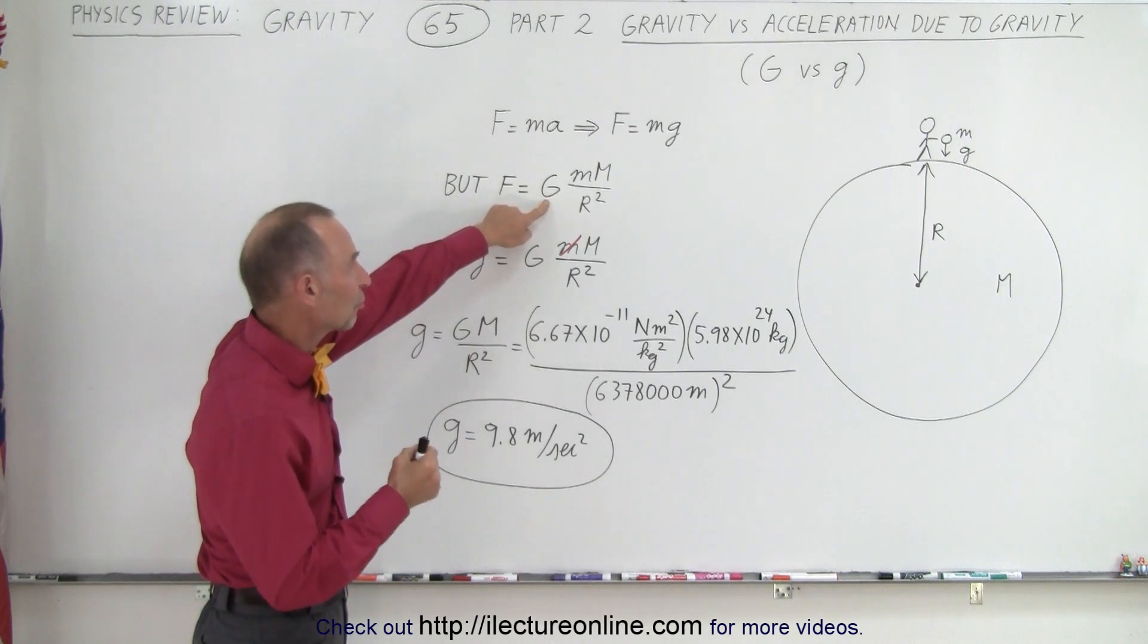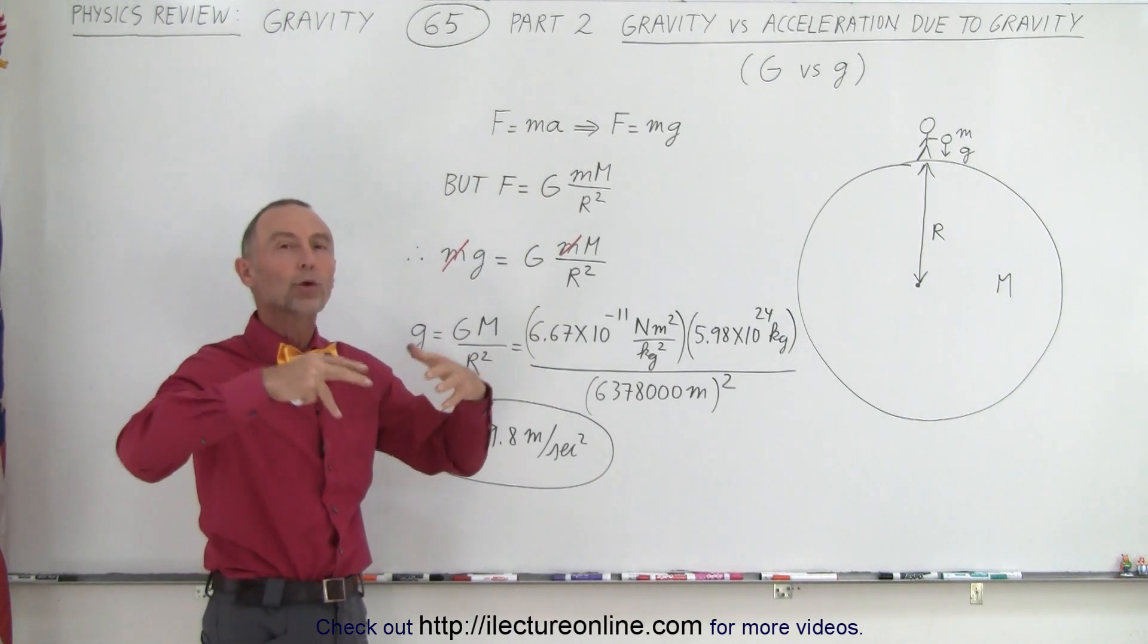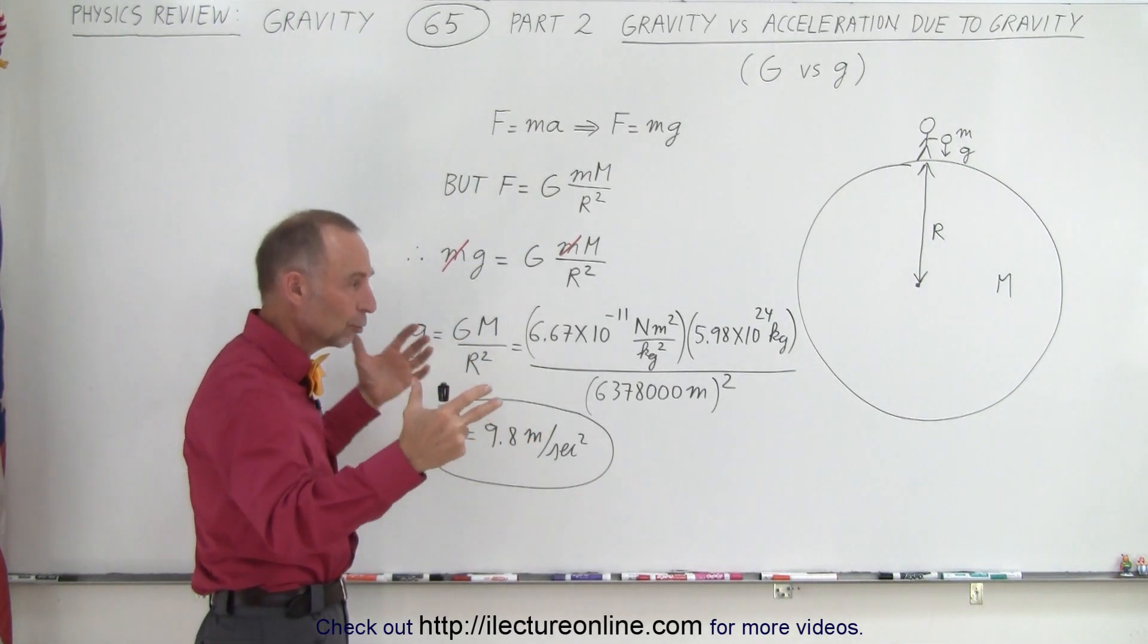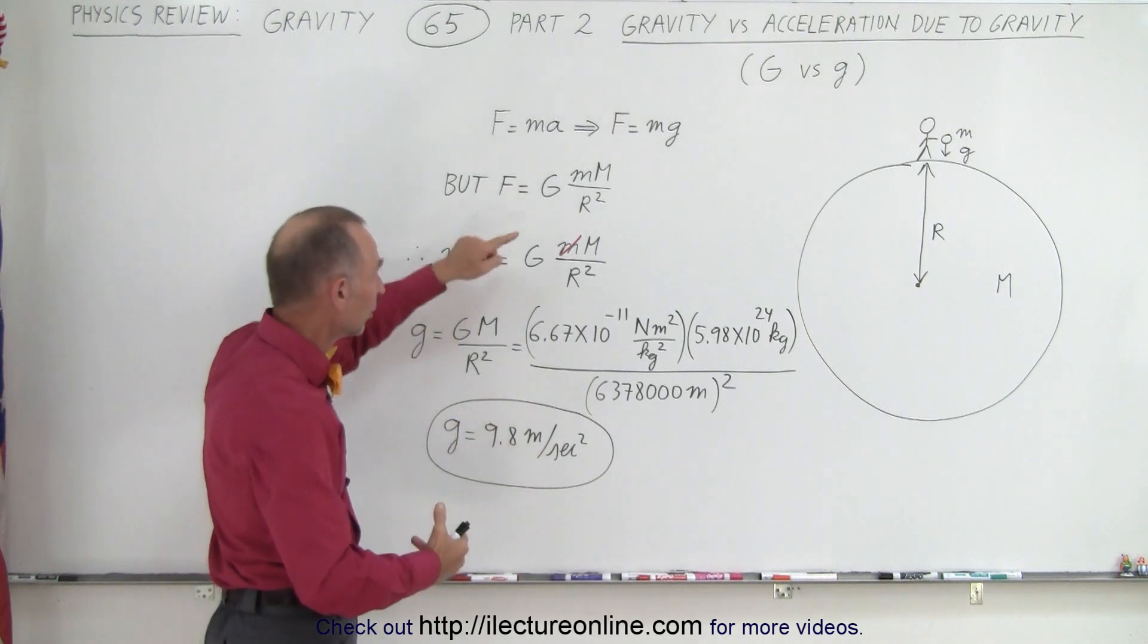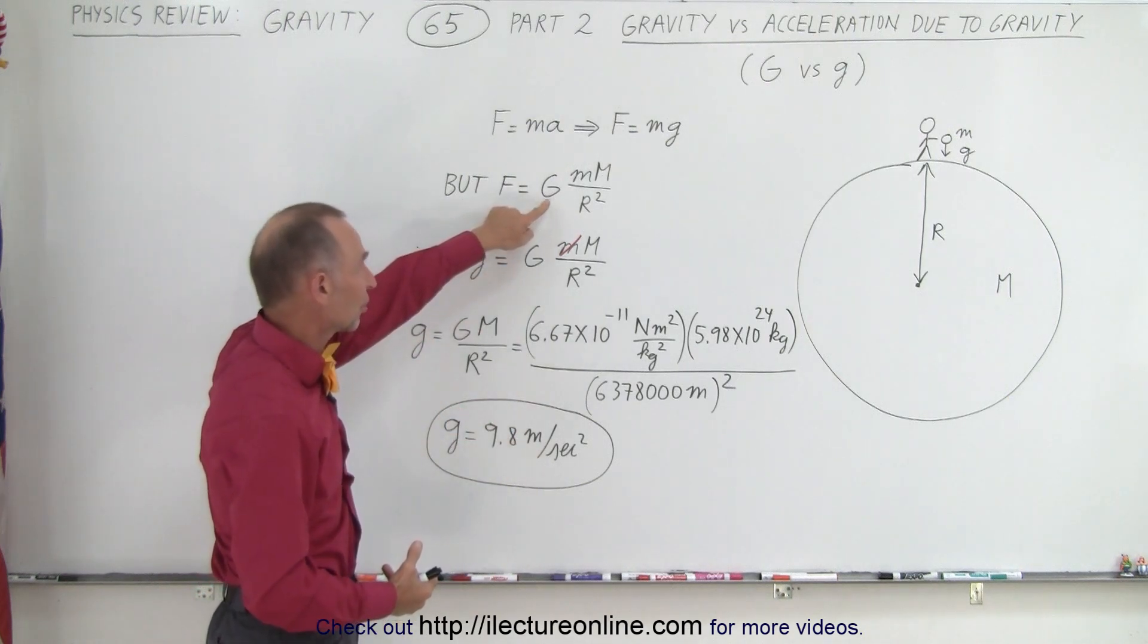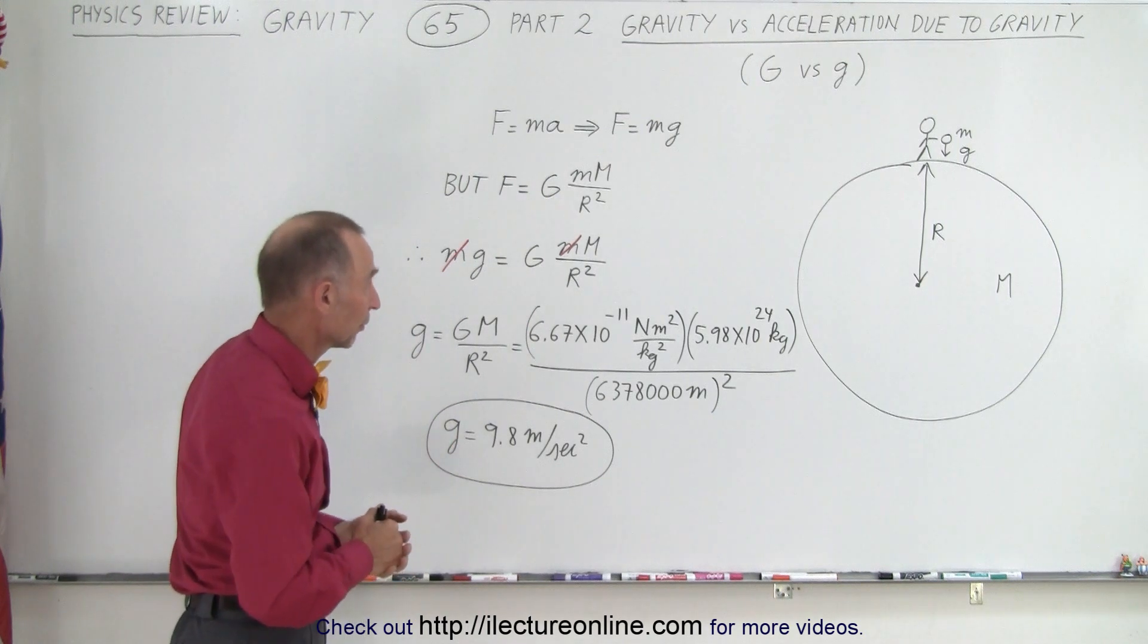G is the universal gravitational constant that applies throughout the whole universe. Everywhere in the universe, two objects will attract one another. We can calculate the force of attraction using this constant anywhere in the universe.